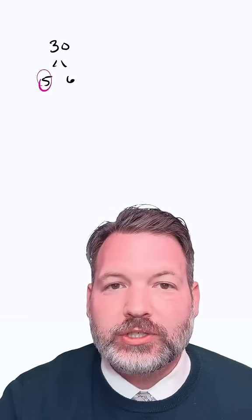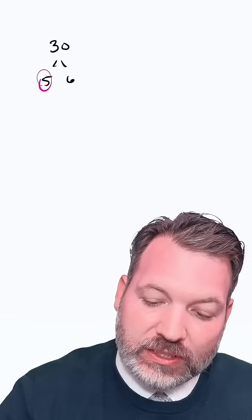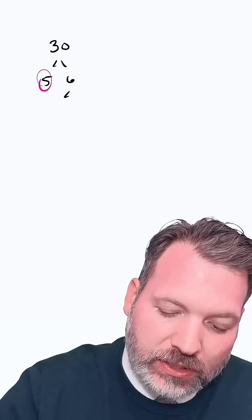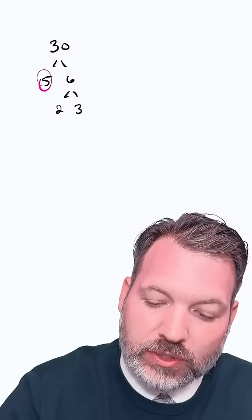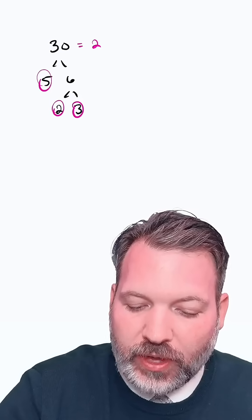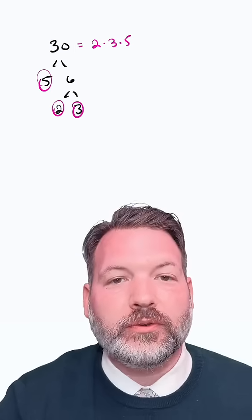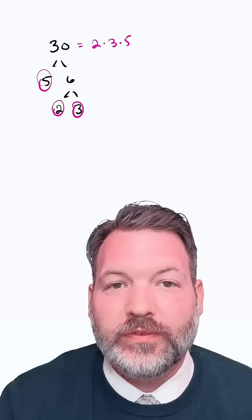But if we write it down as something like 5 times 6, the prime numbers are where we stop the branches. So this branch of 5 is done, but then we can go on because 6 can be written as 2 times 3. Both 2 and 3 are also prime, and so there it is. The only way to factor 30 is 2 times 3 times 5.